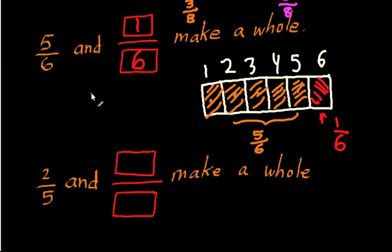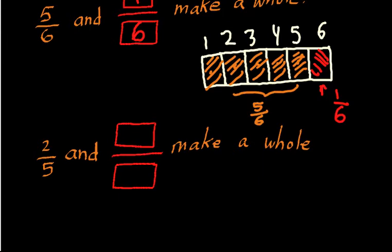Another way to think about that is if I took a rectangle and divided it up into six pieces, you would need to get all six in order to get the whole back. So if I gave you five pieces initially, you would need one remaining piece. Before I said this would be the last problem, but I'm going to do one truly last problem just to really drill it home. If you're getting this already, you can ignore this problem. If you're still not sure, feel free to watch me do it one more time.